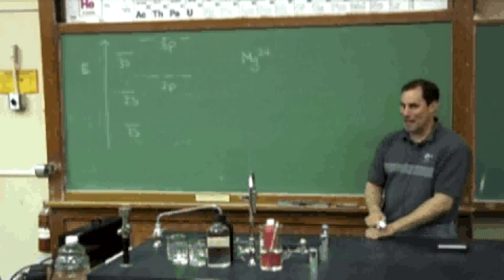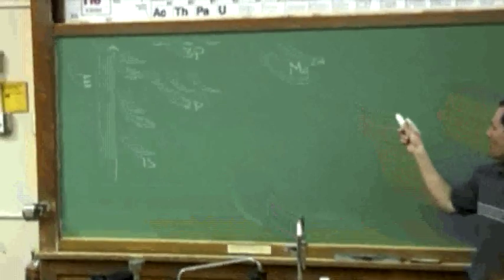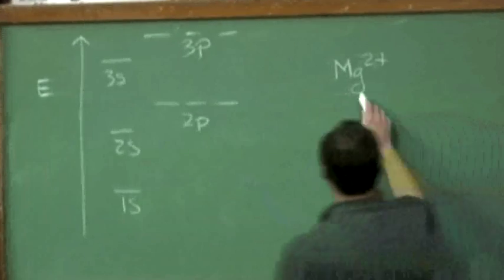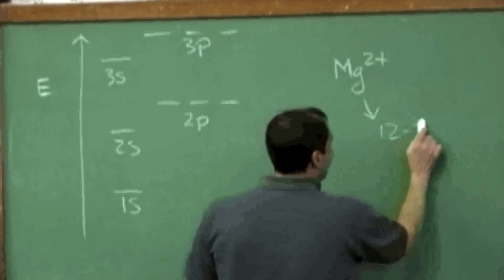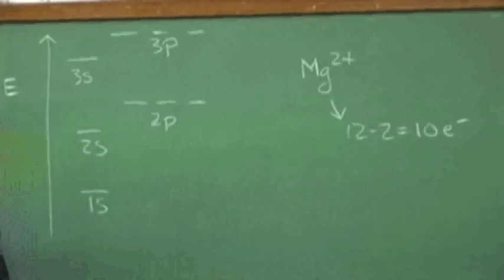So magnesium, the element, has 12 electrons, 12 total electrons, and the 2+ charge means that magnesium, the atom, has lost 2 electrons. So underneath here, let me make a little note that what we're dealing with is a 10 electron system.